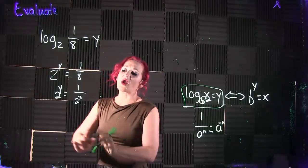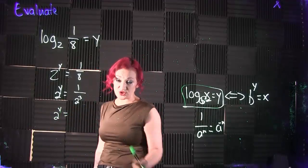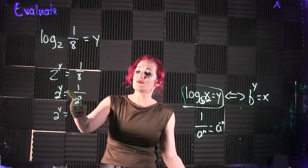Now, I almost have a base of 2 on each side. The only problem is on the right-hand side, that 2 is in my denominator. I need to move that up to my numerator.